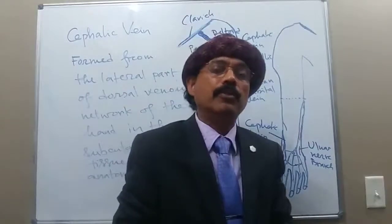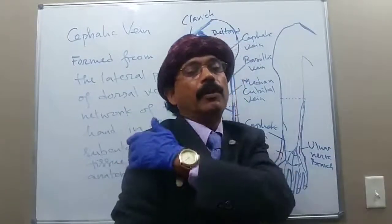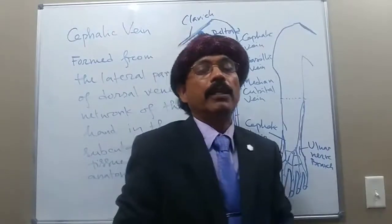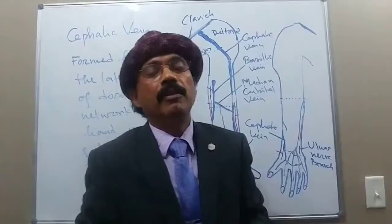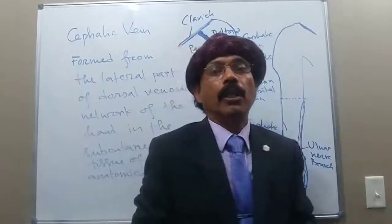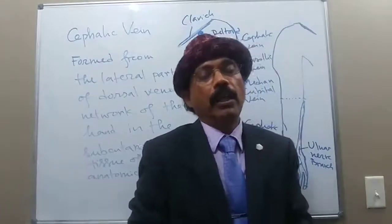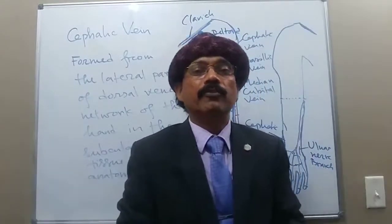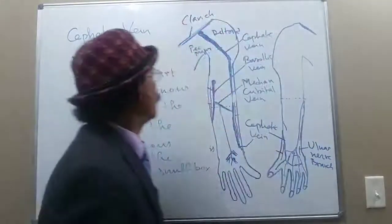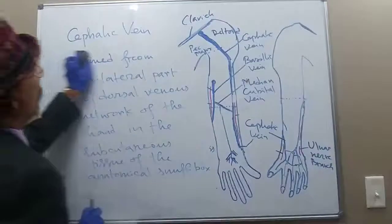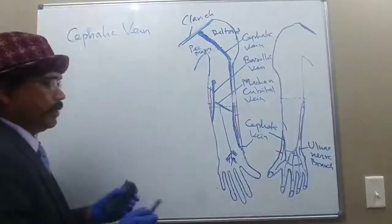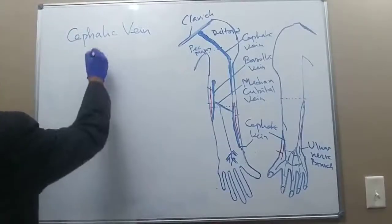The cephalic vein goes to the lower border of the pectoralis major, passes through the deep fascia, then passes between the deltoid muscle and the pectoralis major muscle in the deltopectoral groove. It then reaches the infraclavicular fossa, also called the clavipectoral triangle, and opens into the first part of the axillary vein.